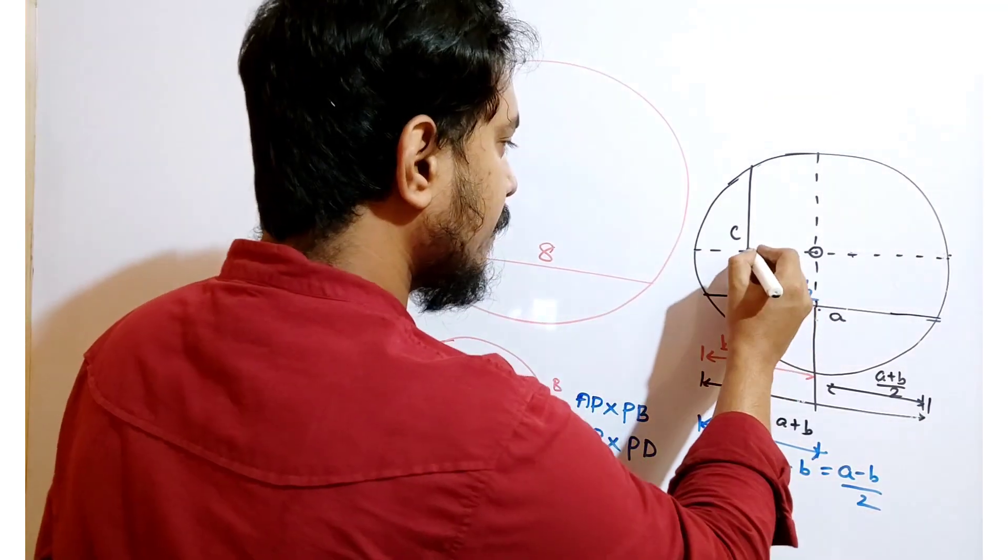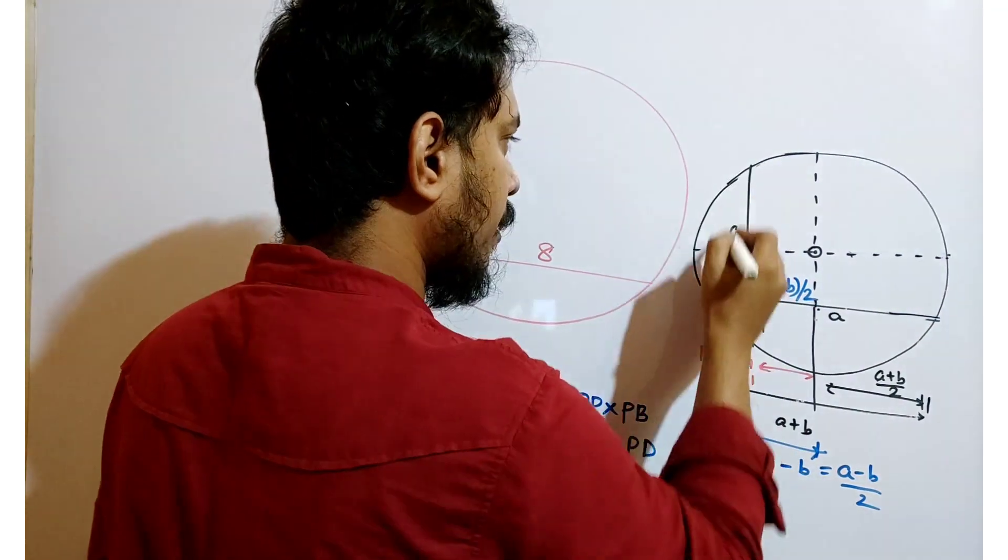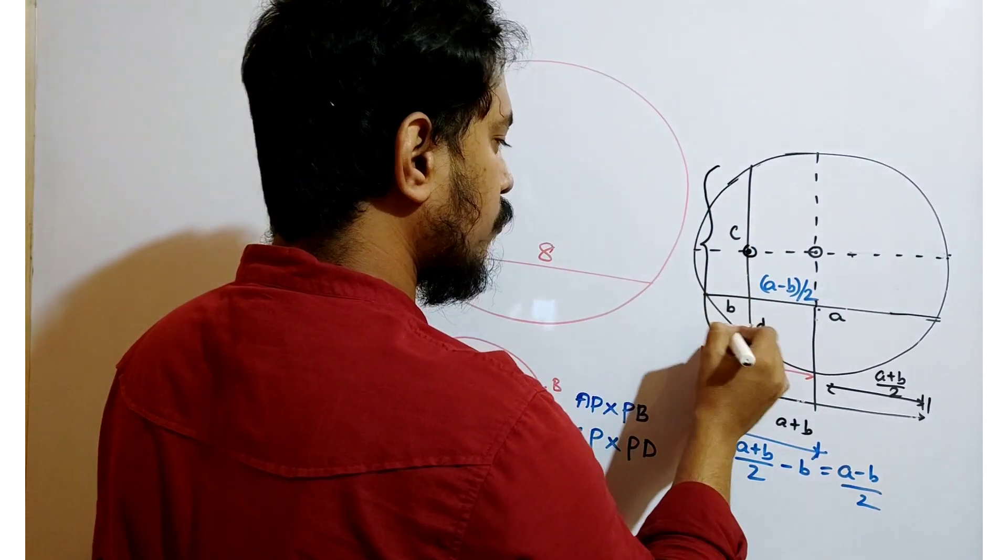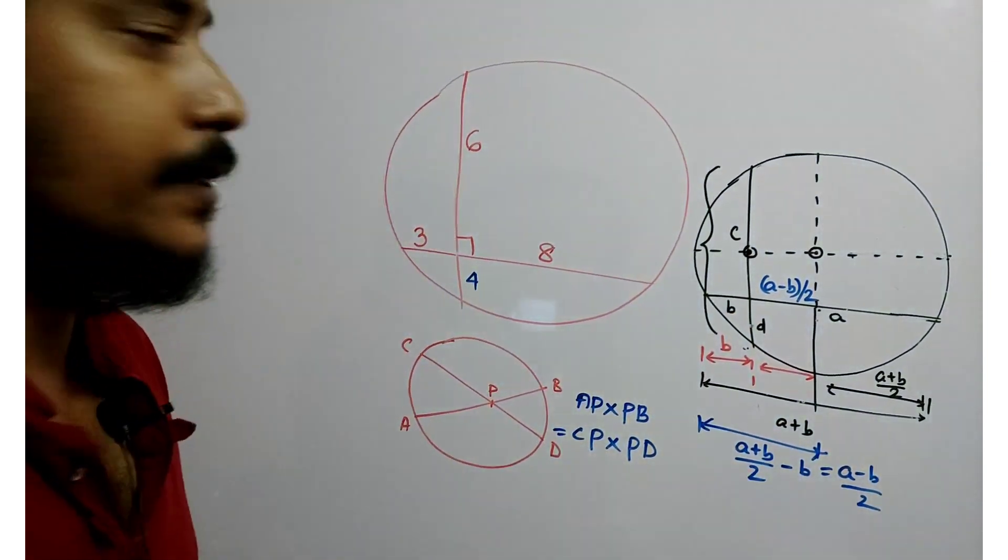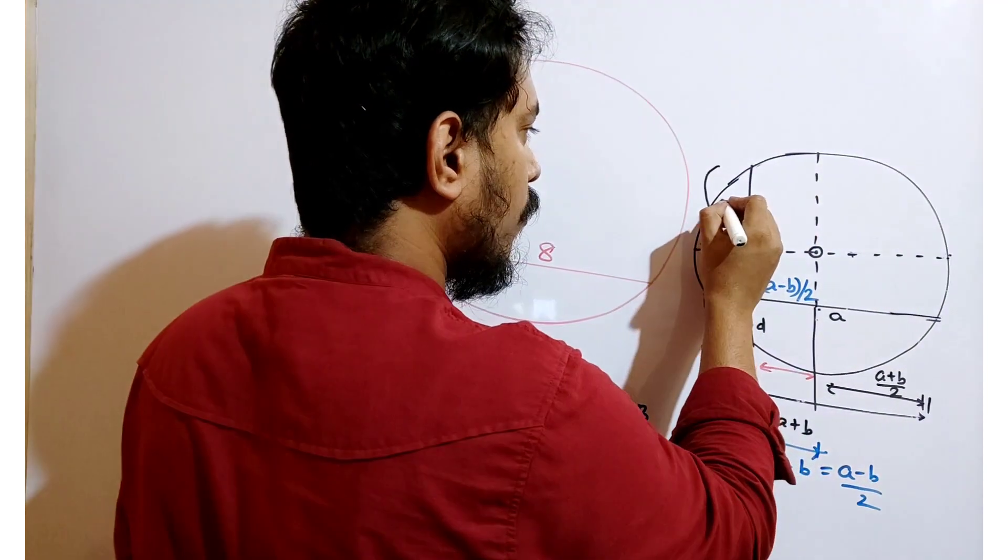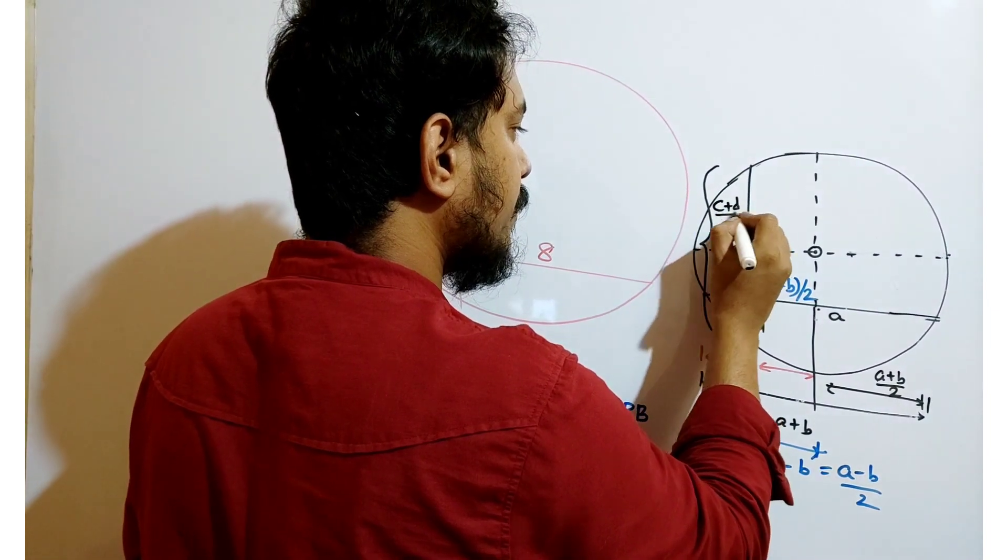Similarly, this is the midpoint of this chord. So length of this chord is C plus D. So what will be this length which is equal to C plus D by 2?